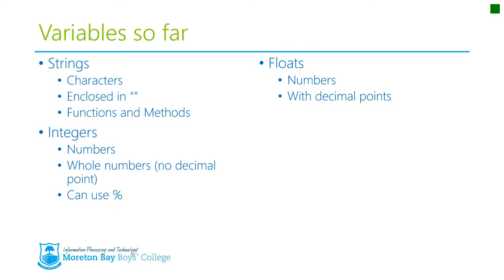So far we've introduced you to three different types of variables: strings, integers, and floats. Strings are basically characters — they're enclosed in inverted commas and they have functions and methods that you can use to actually do operations upon them.